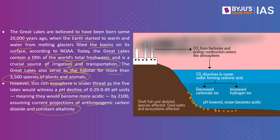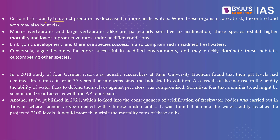When we speak about ocean acidification, shellfish and skeletal species are immediately affected, which ultimately harms food webs and ecosystems. Certain fish lose their ability to detect predators in more acidic waters. Macro-invertebrates and large vertebrates alike are particularly sensitive to acidification — these species exhibit higher mortality and lower reproductive rates under acidified conditions, and embryonic development and species success are also compromised. Conversely, algae become far more successful in acidified environments and may quickly dominate habitats, out-competing other species.